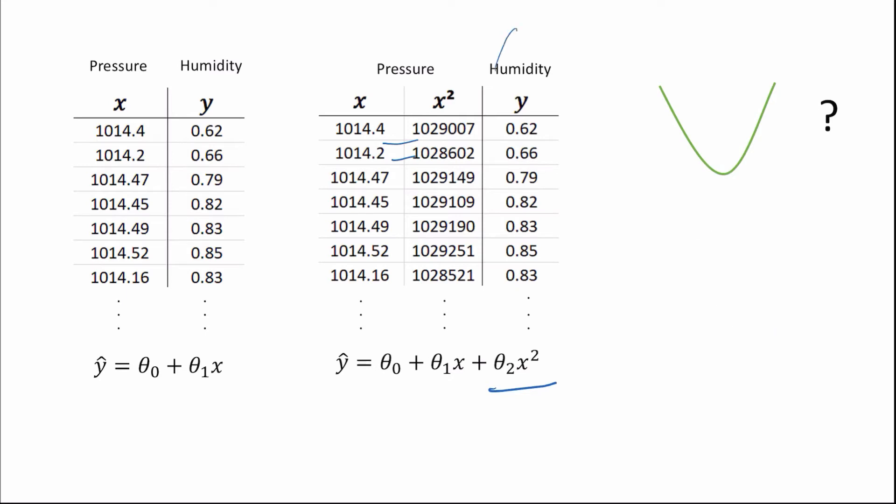If we were to add x cubed here, our model will then be checking, does our data follow a sort of snake-shaped relationship? And so on. If we were to add x to the four and x to the five, we're looking for more and more complex relationships.